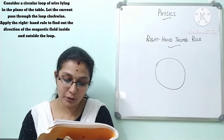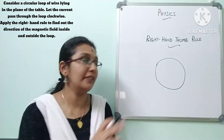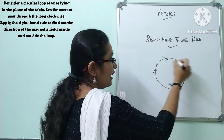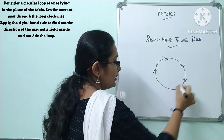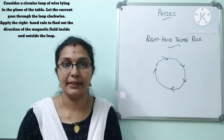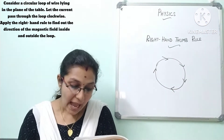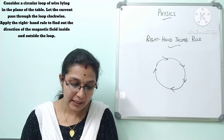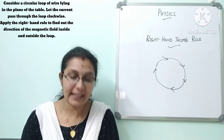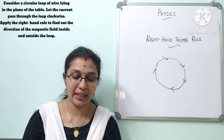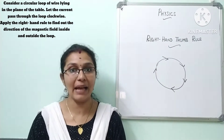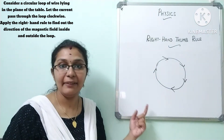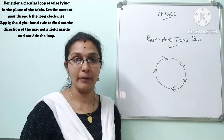Let the current pass through the loop clockwise. So this is our circular loop and the current is passing in the clockwise direction. Apply the right-hand rule to find out the direction of the magnetic field inside and outside the loop. They are asking us to find the direction of the magnetic field lines inside and outside the loop, given that the direction of current is clockwise.